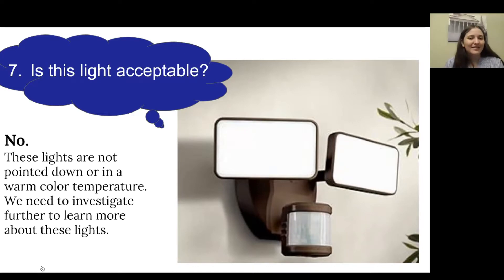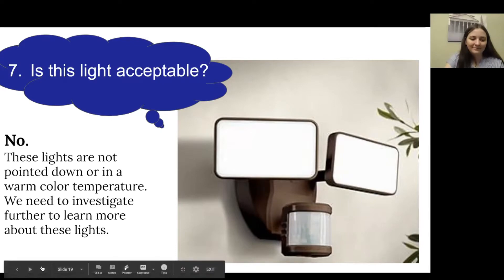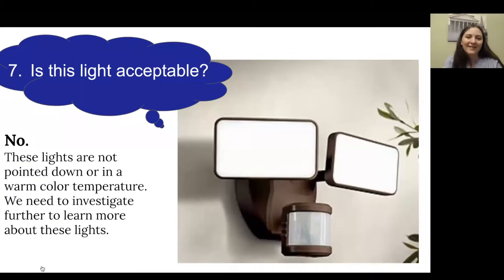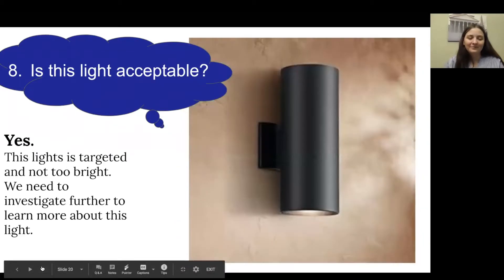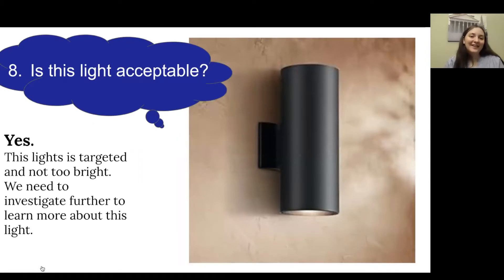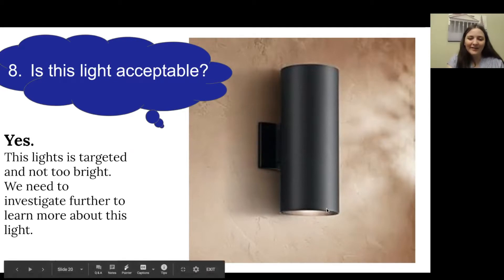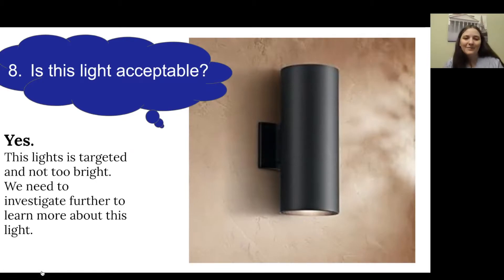Number eight: yes, this light is acceptable. It is definitely targeted — it's a walkway light pointed down into the walkway. We can see a little bit of light coming out from underneath the cylinder, so we know this light is not too bright. We would need to investigate more to learn more about this light.